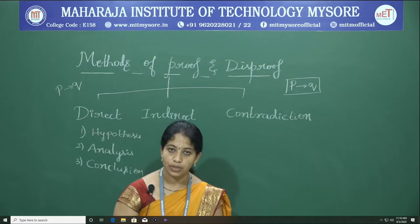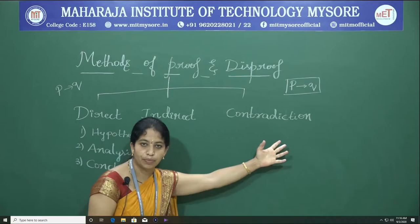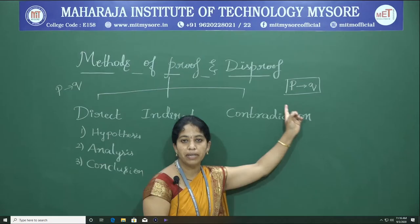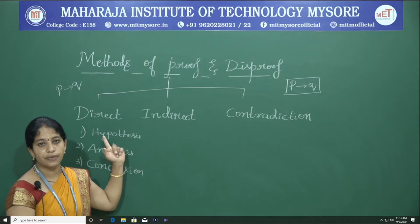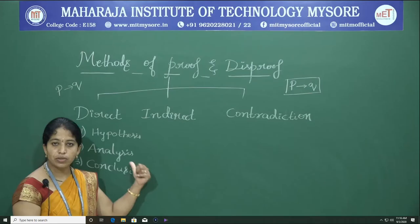Welcome. The last concept in this module on fundamentals of logic theory is methods of proof and disproof. There are three methods: direct proof, indirect proof, and contradiction proof. We will do all these proofs using the conditional statement P conditional Q. In all three proofs there are three steps: the first step is hypothesis, the second step is analysis, and the third step is conclusion.